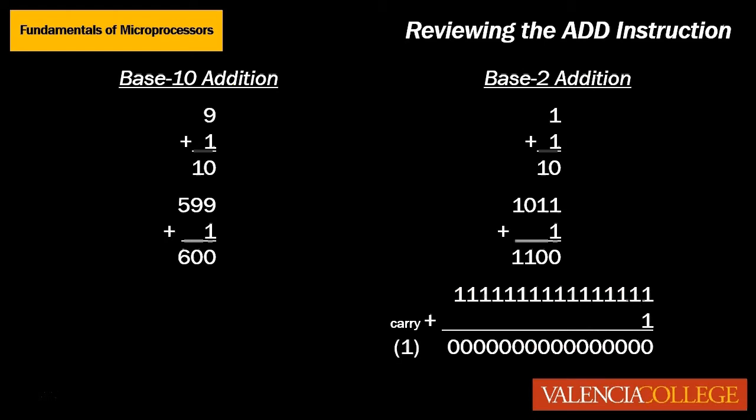The computer performs its math operations in the binary or base two number system where the only two digits available for use are zero and one. Therefore when we compare some base ten and base two addition problems we may start to notice very different but similar patterns. In base ten when we add one to nine we write a zero below and carry one to the next position to the left. Similarly in base two since there were only two digits, we see the carry occur when we add one to one.